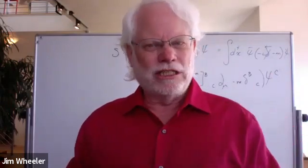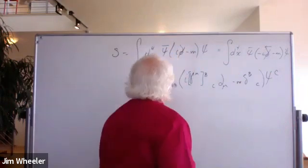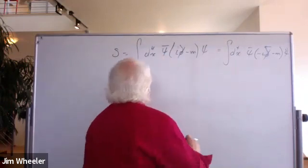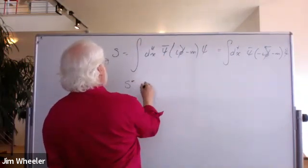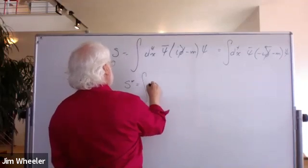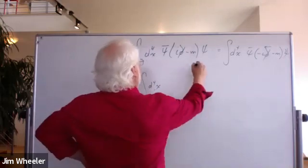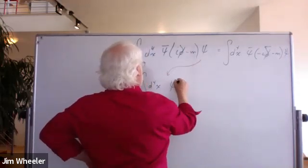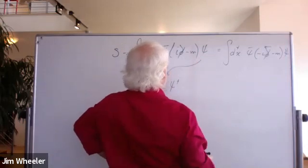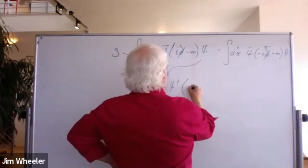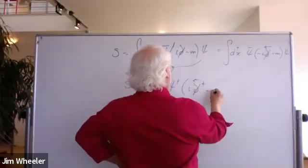If you vary psi in that second equation, you get the conjugate Dirac equation, which is equivalent to the first one. This action is real. We ran through the reality of this action — I suddenly went through and erased the i, and you guys gave me a lot of flack for that, and you were right. It's real with the i. So maybe we should check what happens if we look at the conjugate. Let's look at S conjugate.